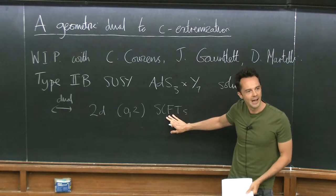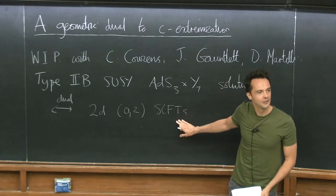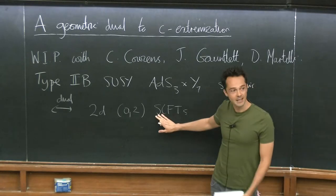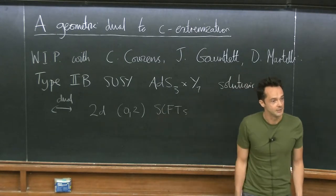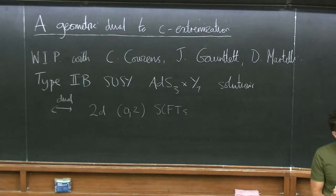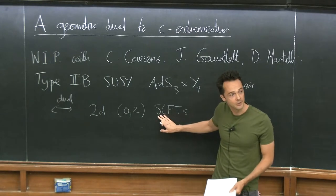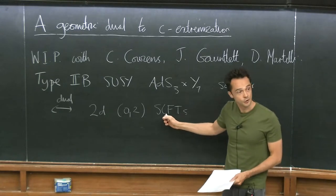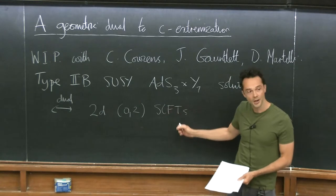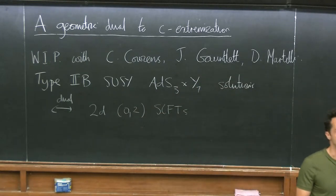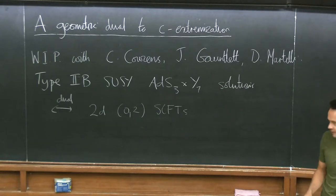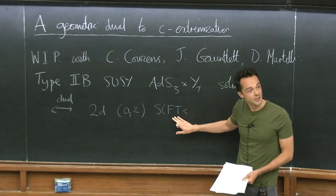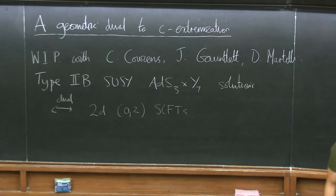On the field theory side, we typically don't have a nice Lagrangian description of these superconformal field theories. Usually at best what we have is some UV Lagrangian for a supersymmetric quantum field theory that we believe flows to an interesting interacting superconformal fixed point. Under those assumptions, there are then certain protected quantities — BPS quantities — that you can compute at the fixed point using that UV description. Examples include the central charge of the 2d CFT and also the U(1)_R symmetry, which sits in the same multiplet as the stress-energy tensor and determines the scaling dimensions of chiral primary operators.